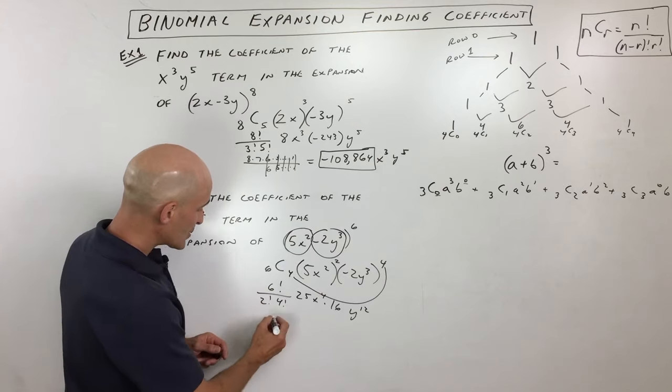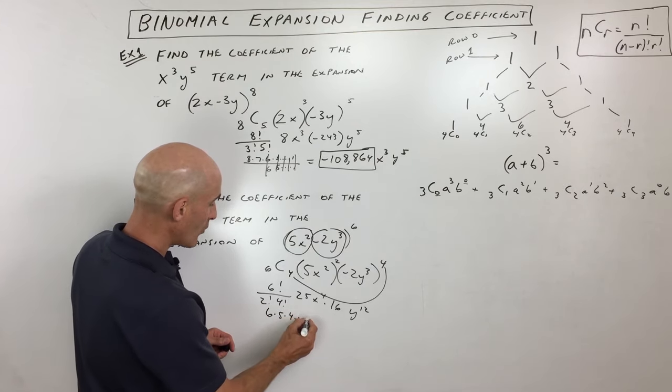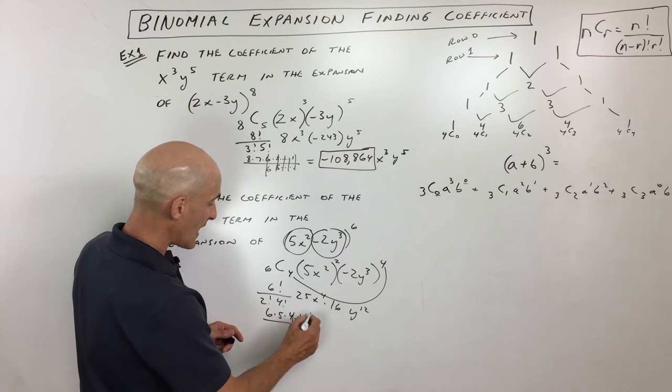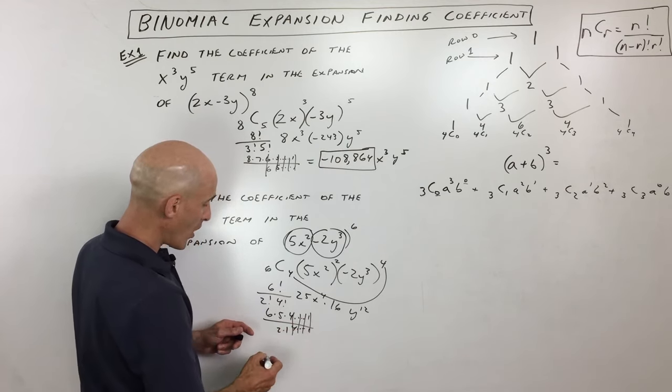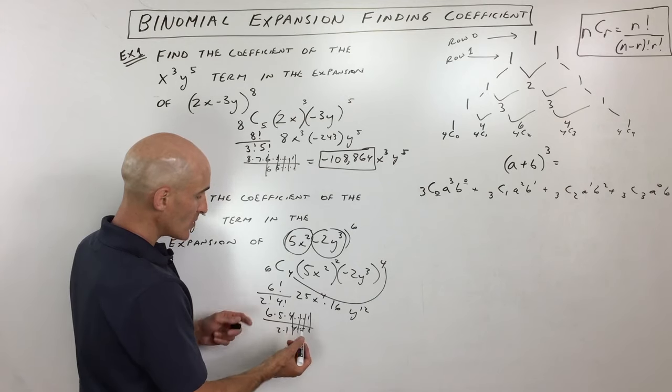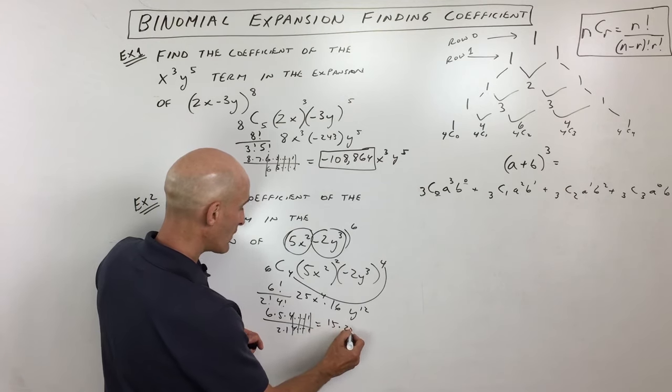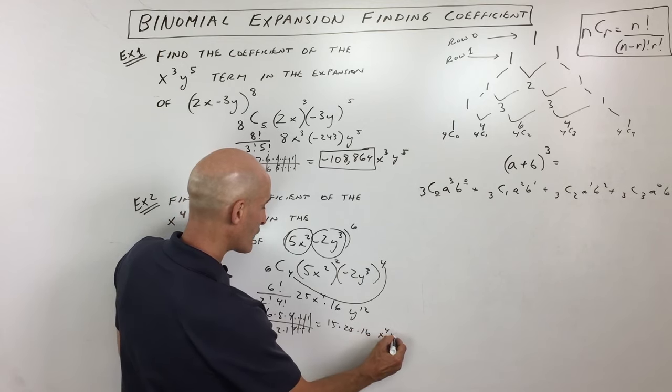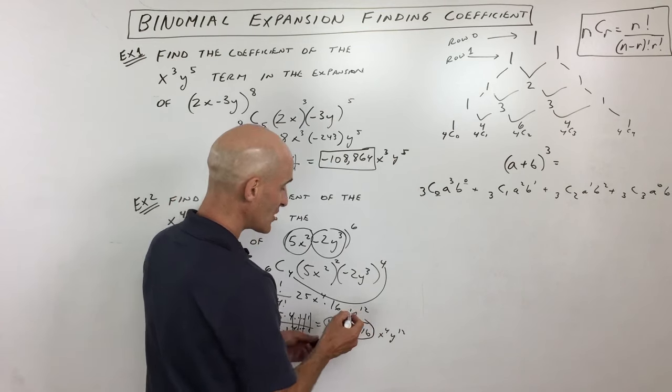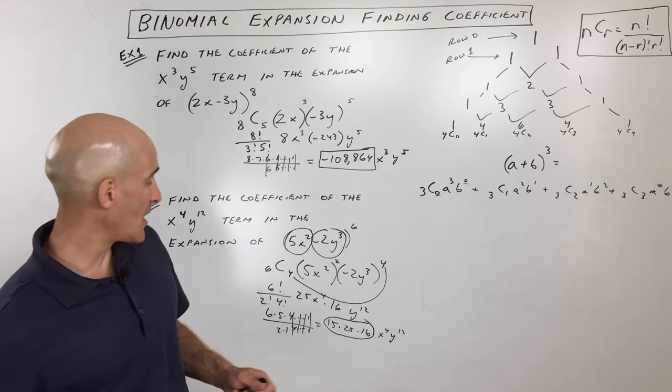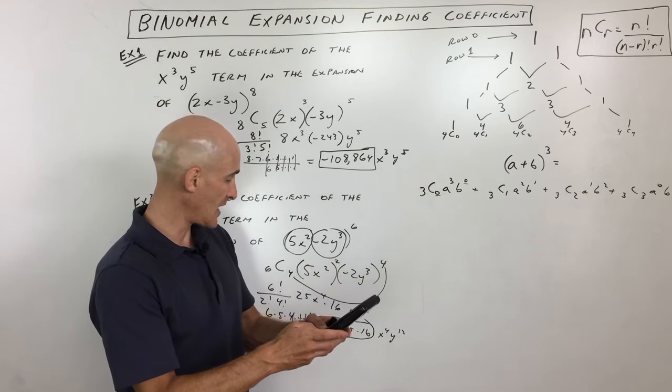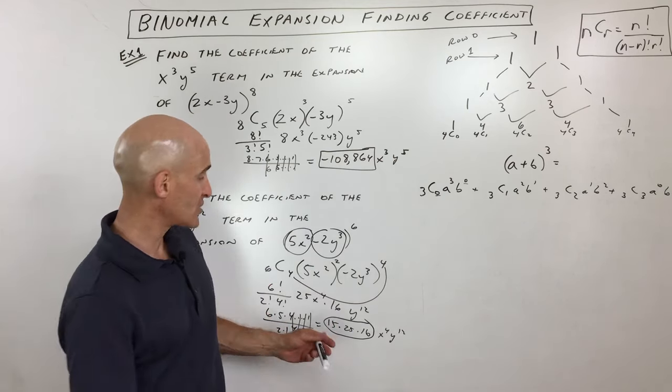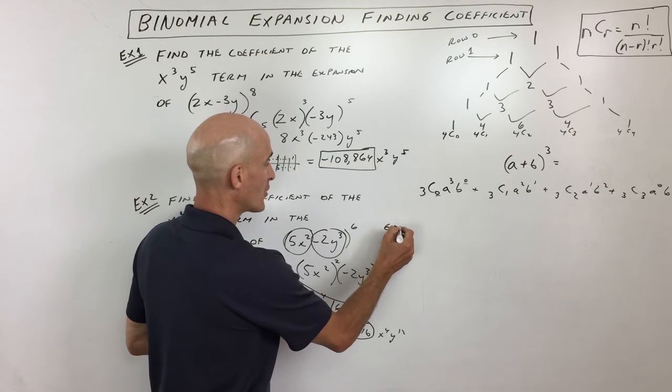And let's simplify this. So 6 factorial is 6 times 5 times 4 all the way down to one. 4 factorial is 4 all the way down to one. So those are canceling. And then 2 factorial is just 2 times one. So this is 30 over 2, which is 15 times 25 times 16, x to the fourth, y to the twelfth. Now we're only interested in the coefficient. So we just have to multiply those values out right there. So that's going to be 15 times 25 times 16. Let's see, that's 6,000. So our coefficient in this particular example is going to be 6,000.